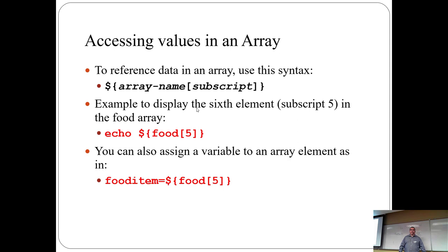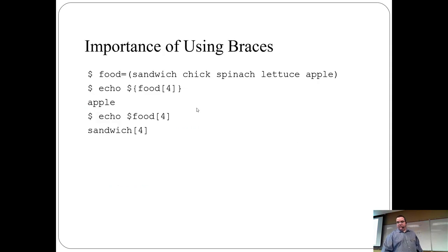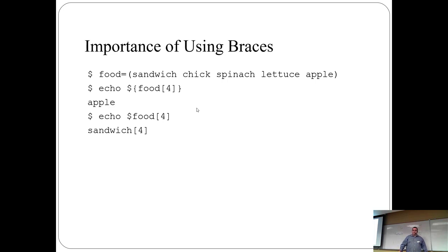Curly braces are important with arrays. If you go 'echo food[4]' without curly braces, it'll echo 'sandwich[4]' literally. But if you go 'echo ${food[4]}' with the curly braces, it'll output 'apple'. That's just how it works.